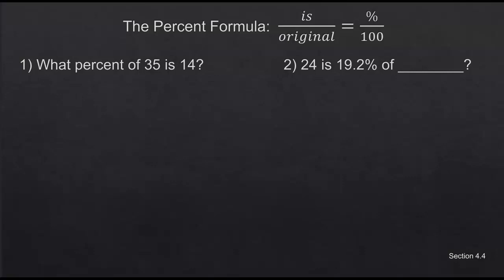Now notice we have the percent formula. There are all kinds of ways to set up percents, and if you have a method that works for you that's okay, as long as it works and you can set it up correctly. The way I like to teach it is as a proportion: the 'is' number over the original number equals the percent over 100. We set it up as a proportion and solve it like the proportions we did earlier in this chapter.